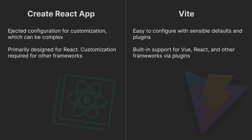Create React App is primarily designed for React, and customization is required for other frameworks, while Vite has built-in support for Vue, React, and other frameworks via plugins.